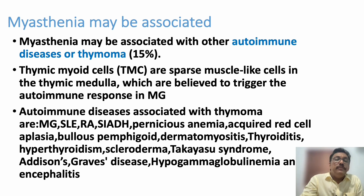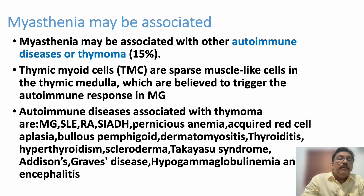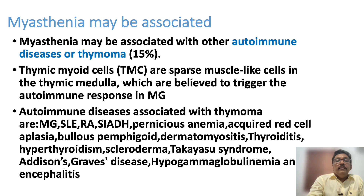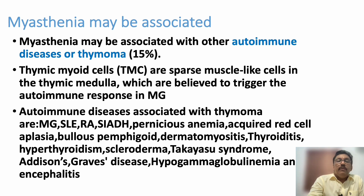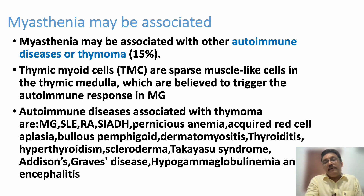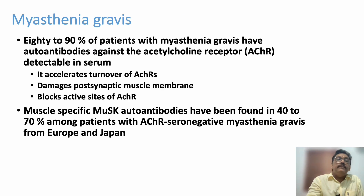Different types of immune-mediated disorders can be associated with myasthenia gravis or thymoma. In thymoma, thymic myoid cells — sparse muscle-like cells in the thymic medulla — can trigger the immune response. Many diseases are associated with thymoma: myasthenia gravis, SLE, rheumatoid arthritis, Sjögren's, pernicious anemia, bullous pemphigoid, dermatomyositis, thyroiditis, scleroderma, Takayasu's disease, Addison's, and Graves' disease.